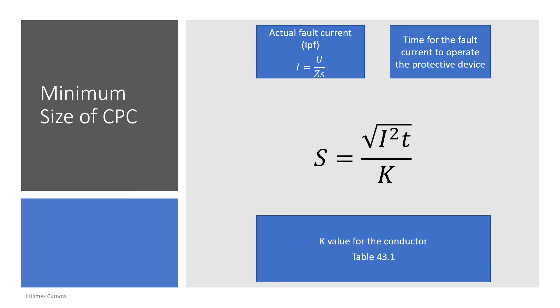The second adiabatic equation is for the minimum size of CPC. That is S equals the square root of I squared multiplied by T divided by K. In this equation we're talking about fault current which is always live to earth. To find the current I we divide the voltage by the Zs, which can be measured or calculated, and that gives us the actual fault current.